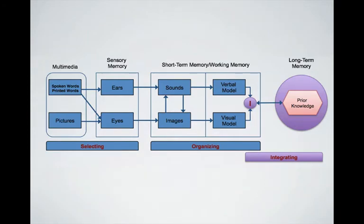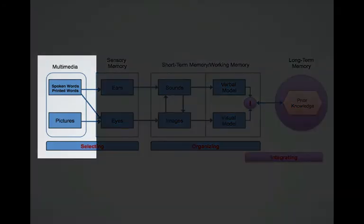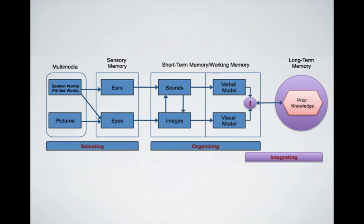We'll pretend that this represents a lesson, and the lesson may contain pictures and words in printed or spoken form. The pictures and printed words enter the learner's cognitive processing system through the eyes. Spoken words enter through the ears, and all of this gets processed in the sensory memory.